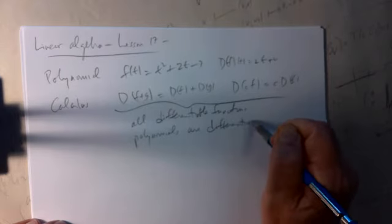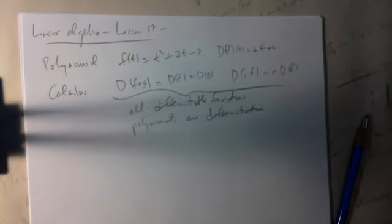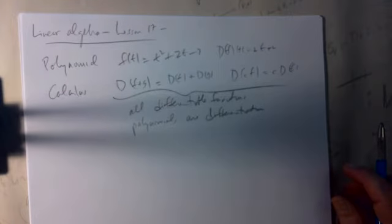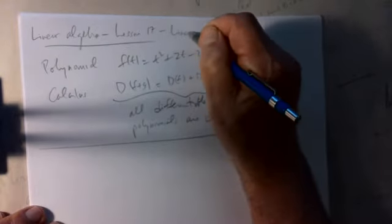The solution to the problem is just what we learned in calculus: the derivative is a linear operator. This is really just to point out that differentiation and integration, the operations you learned in calculus, are examples of linear transformations.